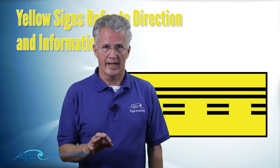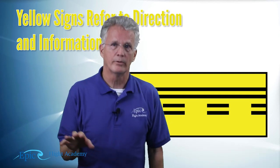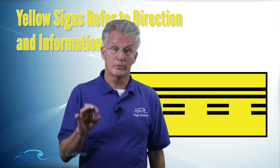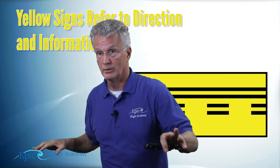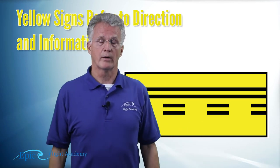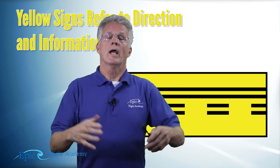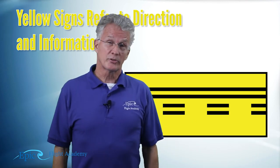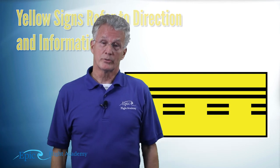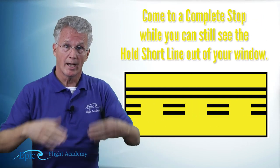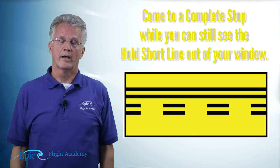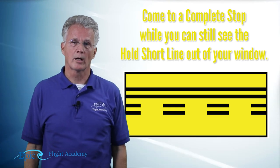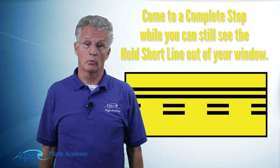The solid lines are the taxiway side, and that's where you're sitting in your airplane holding short. It's important to know that if any part of your airplane crosses that line, whether it's a wingtip or a tail, you violated that runway space. As you work with your flight instructor, you'll discover that one good way to approach these is to come to a complete stop while you can still see that hold short line outside your cockpit window. That way, you know you're well clear.